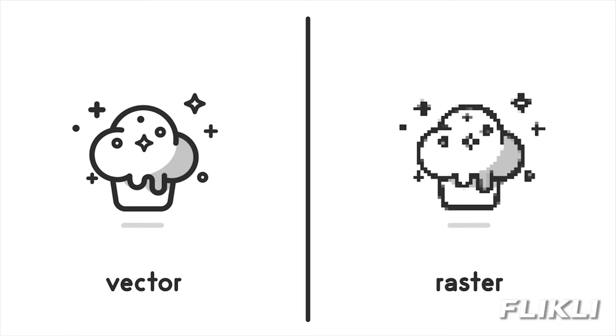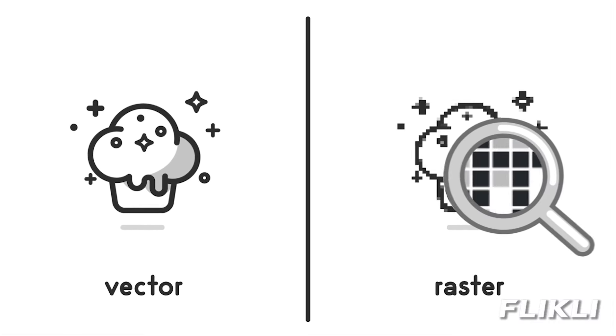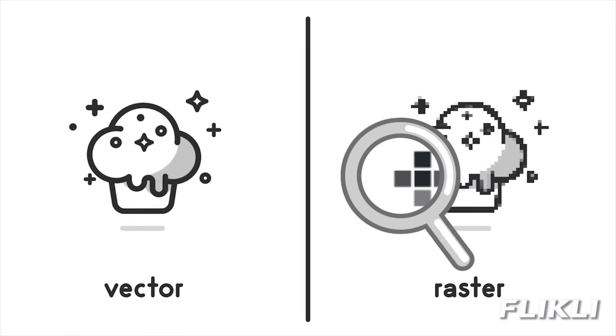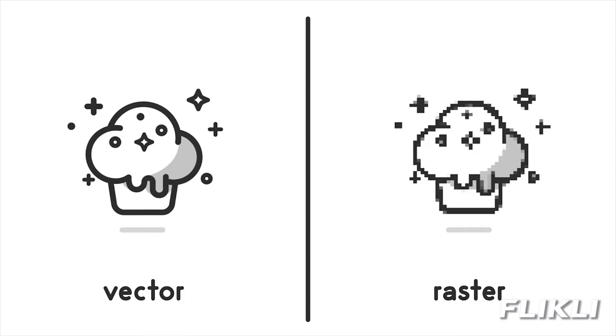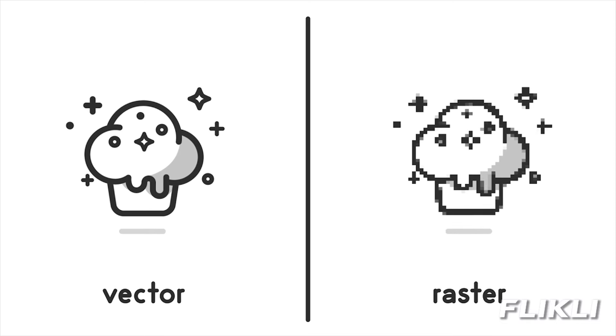The raster cupcake is grainy and distorted because it's made up of a bunch of small units called pixels. Zooming in makes the pixels a lot more obvious.